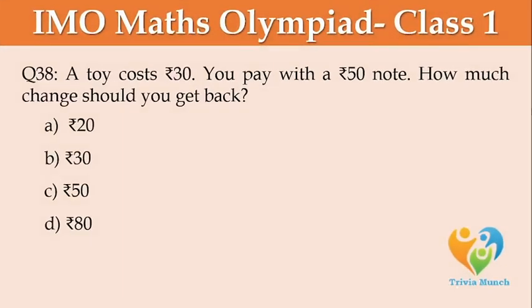A toy costs 30 rupees. You pay with a 50 rupees note. How much change should you get back? Option A: 20 rupees, Option B: 30 rupees, Option C: 50 rupees, Option D: 80 rupees.